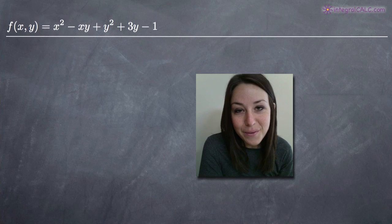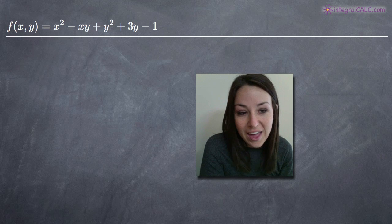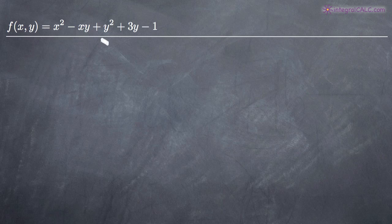Hi everyone! Welcome back to integralcalc.com. Today we're going to be talking about how to use the second derivative test to find local maxima and minima. In this particular problem we've been given the function f(x,y) = x² - xy + y² + 3y - 1, and we're going to be using the second derivative test to find whether or not this function has any local maxima or minima.